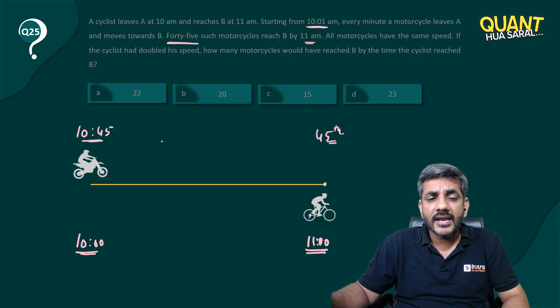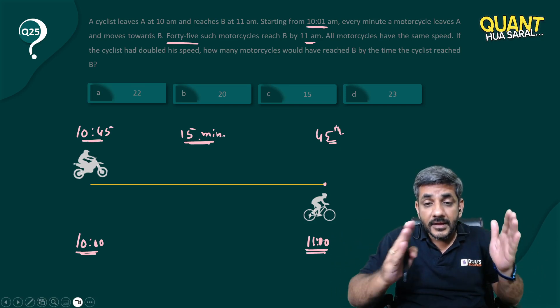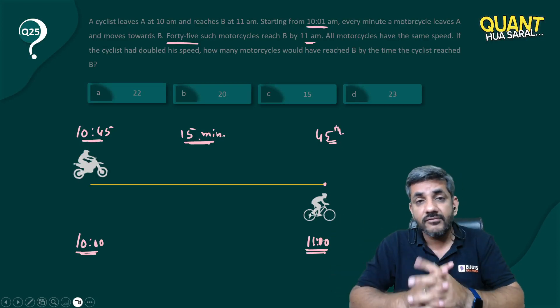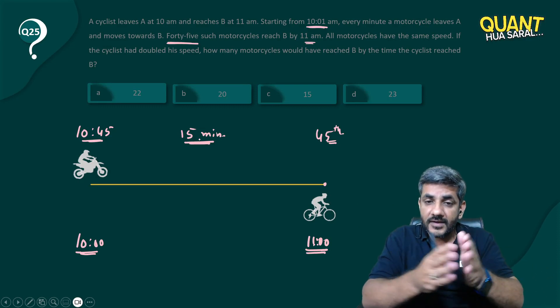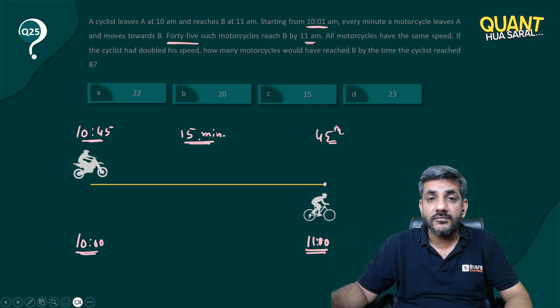So can I say this motorcyclist must have taken approximately 15 minutes to cover this track? He met the cyclist at 11 o'clock at the other end, the cyclist reached there at 11 o'clock, and he started from this end at 10:45. So we can say that he takes 15 minutes to cover this track.